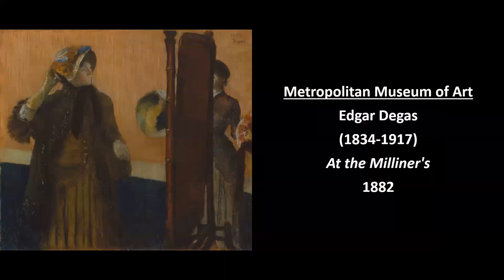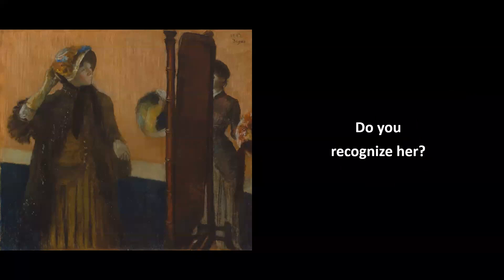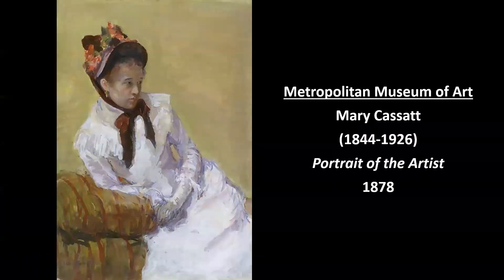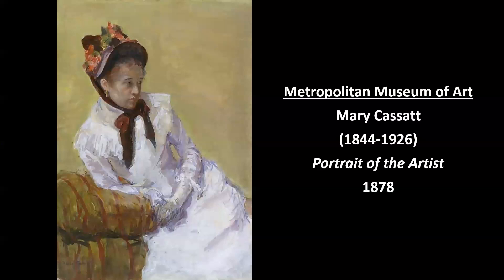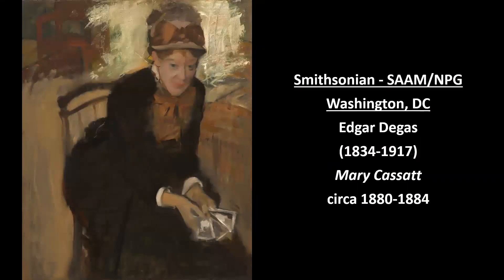This is 'At the Milliner's' from 1882 — a hat shop — another scene of urban life, shopping in Paris. The woman on the left — do you recognize her? It's Mary Cassatt, the famous artist. Mary Cassatt was a friend of Degas; a lot of the Impressionists were friends with one another. Here's her self-portrait at the Met. There's also a portrait of her by Degas at the Smithsonian in Washington DC — one of the few artworks by a non-American artist in the Smithsonian, included because the subject, Mary Cassatt, was American.